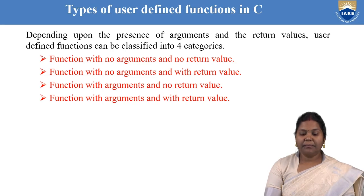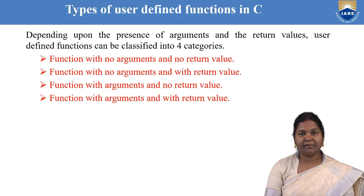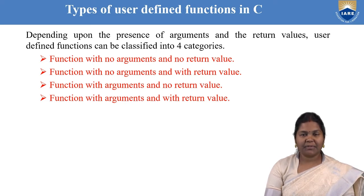Depending on the presence of arguments and return values, the functions can be categorized or written in four ways. The first category is called Functions with No Arguments and No Return Value, the second is Functions with No Arguments and With Return Value, the third is Functions with Arguments and No Return Value, and the fourth is Functions with Arguments and With Return Value. Let us discuss one by one how to write the function using each of these categories.